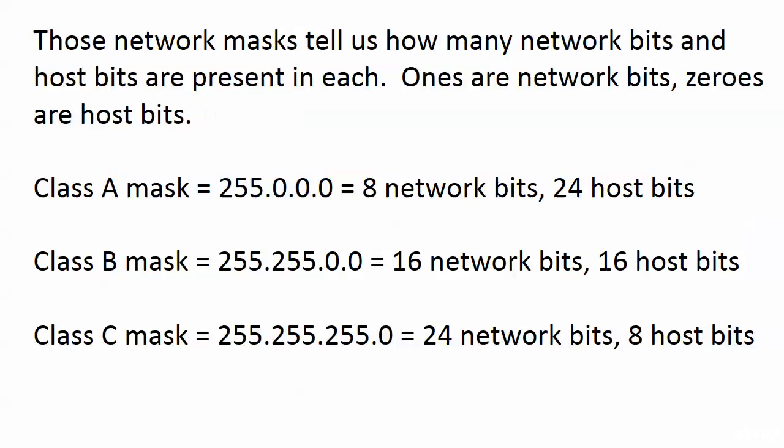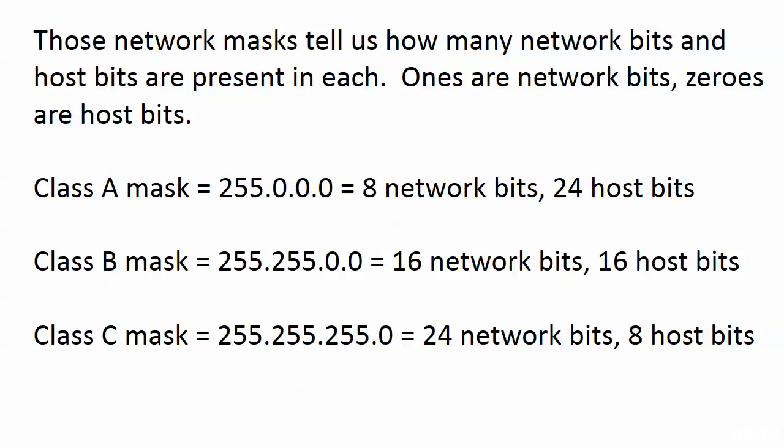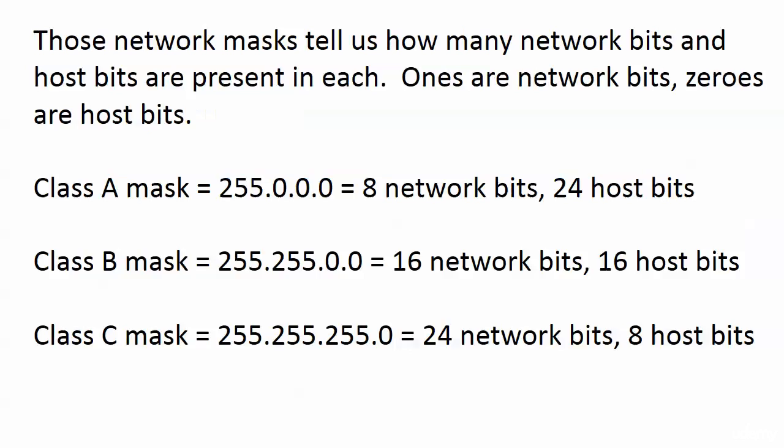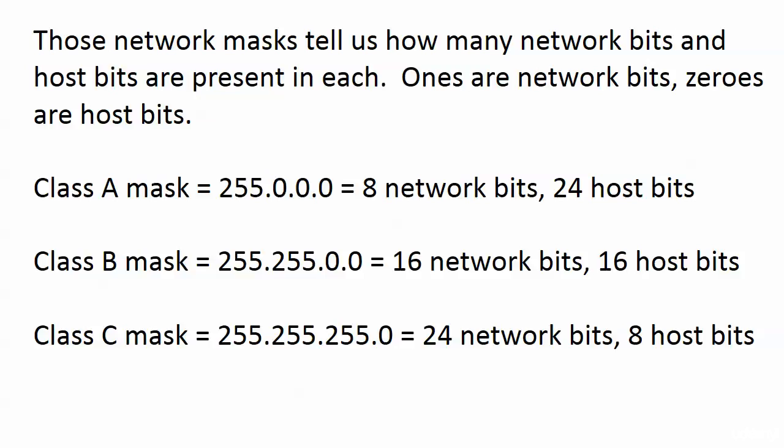Why am I bringing these up right now? These network masks tell us how many network bits and host bits are present. Ones are network bits and zeros are host bits. Notice I'm not saying anything about subnet bits yet, because no subnetting has been done. The Class A mask has 8 network bits and 24 host bits. Class B gives us 16 network bits and 16 host bits. Class C has 24 network bits and 8 host bits.